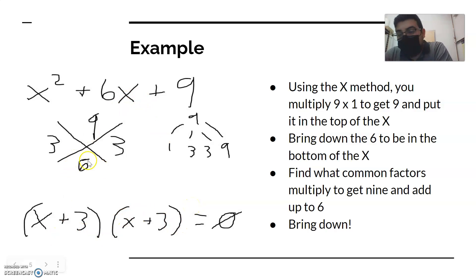Once you figure that out, all you're doing is turning this into a binomial. You're bringing the positive 3s down, so it would be (x + 3)(x + 3) and you set it equal to zero. And that's how you factor the equation. Very simple stuff.